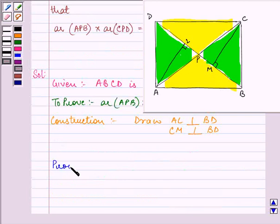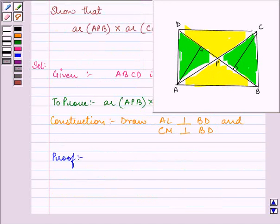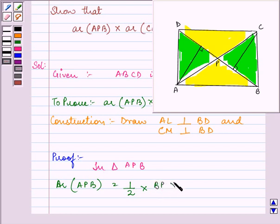So now let's start with our proof. In triangle APB, we know that area of APB will be equal to half into base, that is BP, into altitude, that is AL. Let this be the first equation.